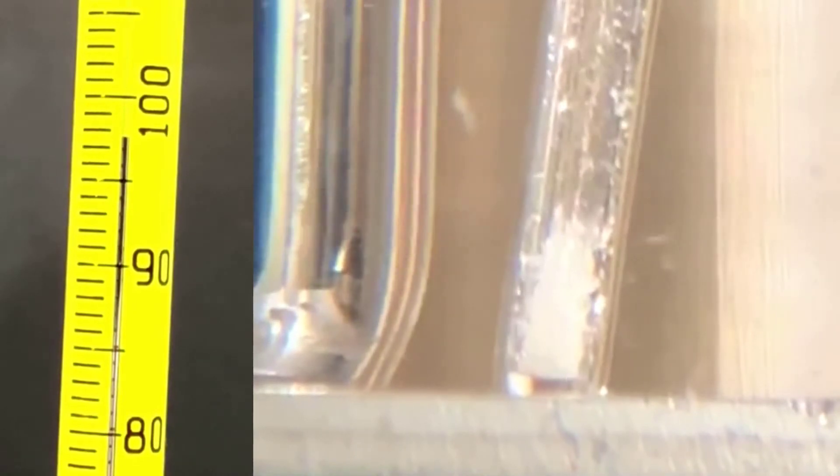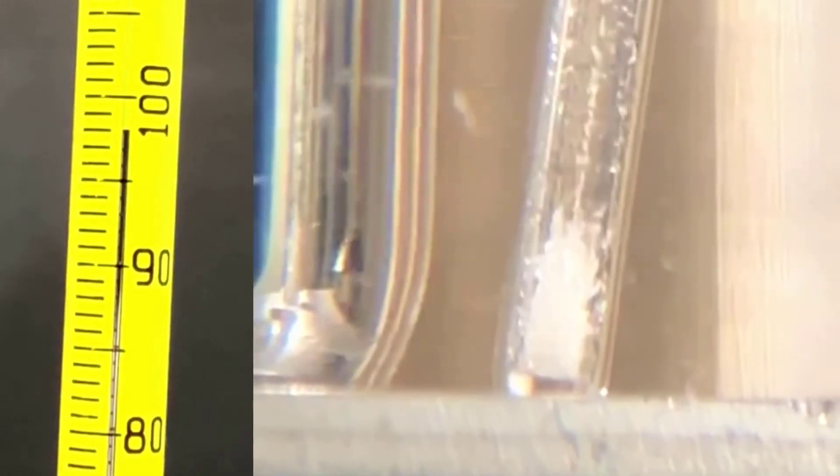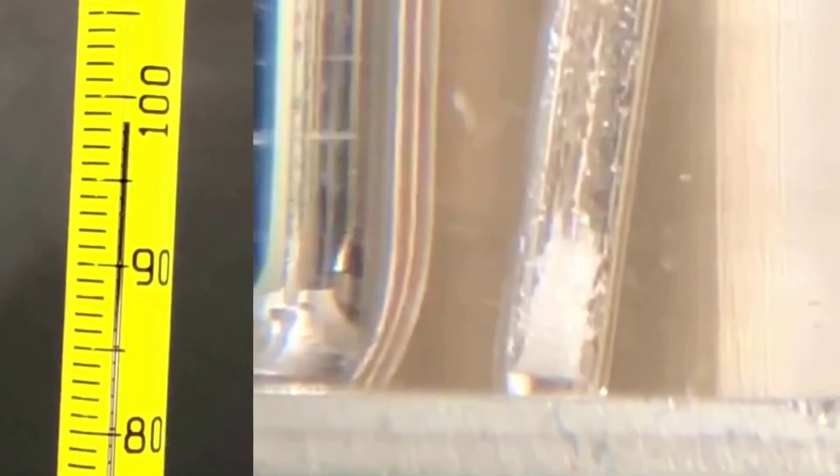Then, when the last bit of solid disappears and it's all liquid, record that temperature as well. The melting point range represents a slushy state of the material where solid and liquid coexist. The range can tell you about the purity of the sample. If your melting point range is greater than about 4 degrees, it indicates your sample is probably not pure.